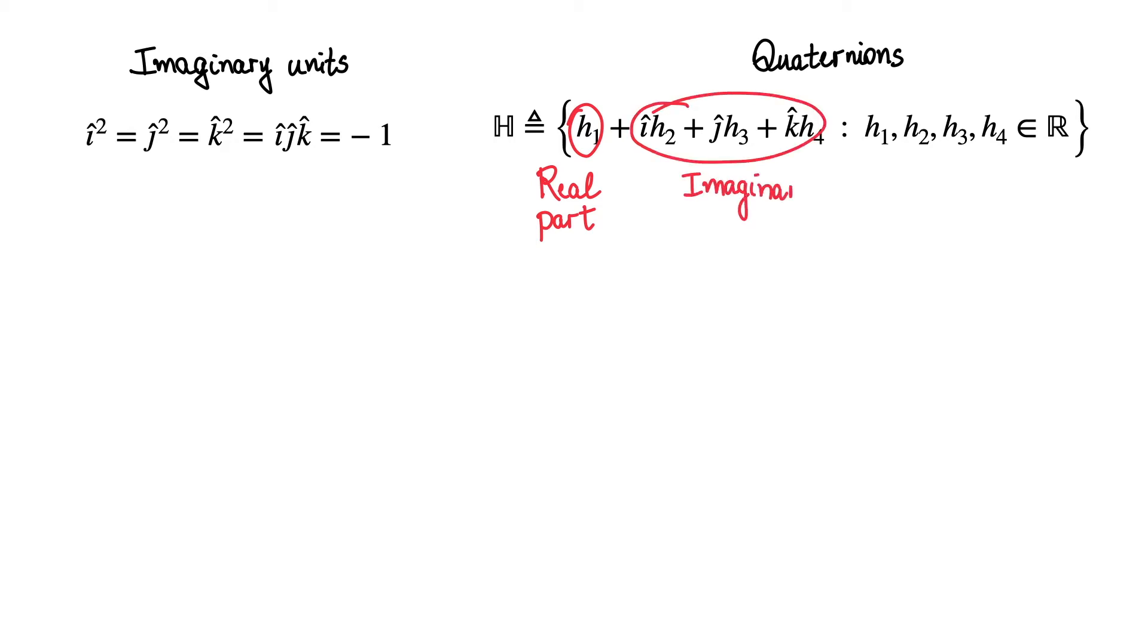Given the imaginary units i, j and k, which obey their equalities below, the set of quaternions is defined analogously to the set of complex numbers, where we have a real part, which is the term that is not multiplied by any imaginary unit, and an imaginary part that contains terms multiplied by the imaginary units.